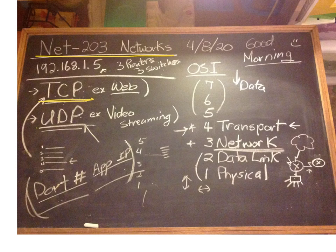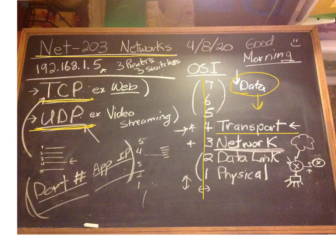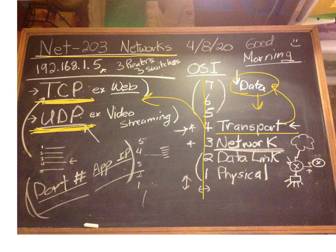We talked some more about TCP and UDP and looked at the OSI model — did a little review there. We talked about data coming down through the model. The transport layer, which is what we're talking about here, is how are we going to transport the data — are we going to make sure it gets there, or are we just going to send it? Like video streaming, just sending the information; or a web page, making sure we get all of the data transmitted.